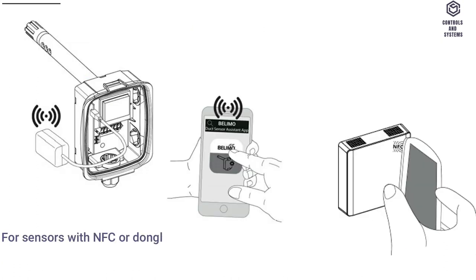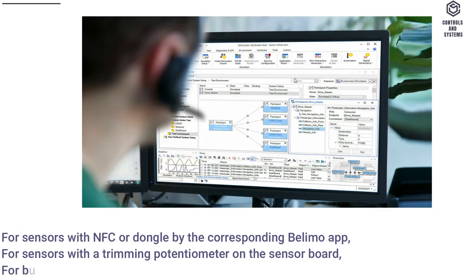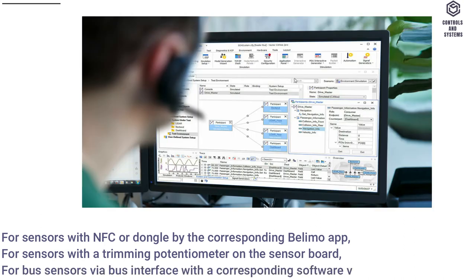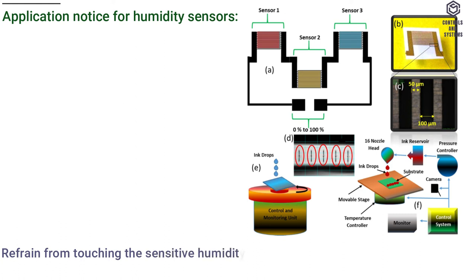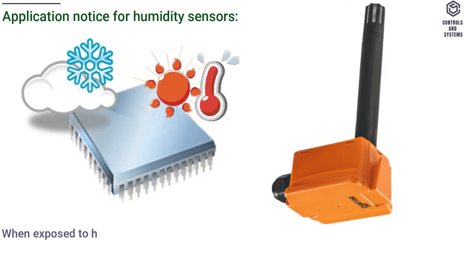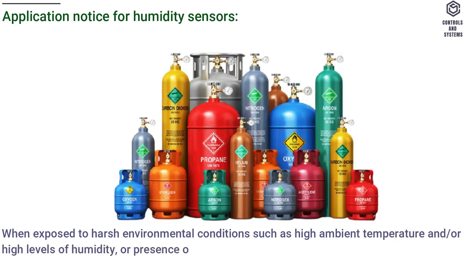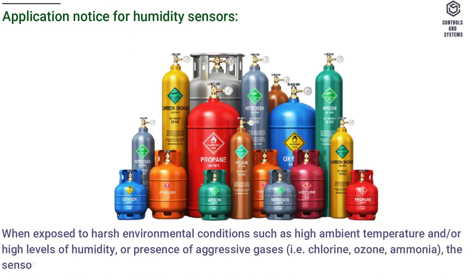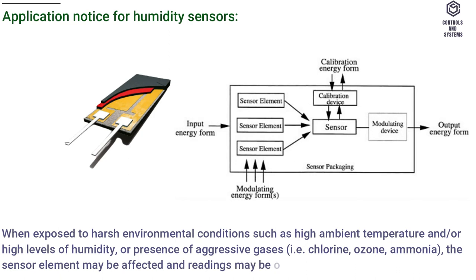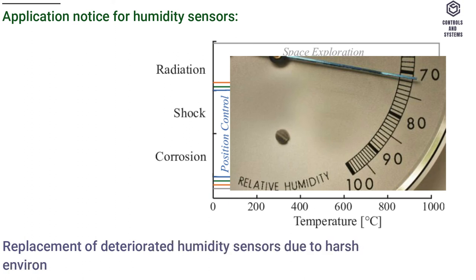Adjustment methods: for sensors with NFC or dongle, by the corresponding Belimo app; for sensors with a trimming potentiometer on the sensor board; for bus sensors via bus interface with a corresponding software variable. Application notice for humidity sensors: refrain from touching the sensitive humidity sensor element — touching the sensitive surface will void warranty. When exposed to harsh environmental conditions such as high ambient temperature and/or high levels of humidity, or presence of aggressive gases (chlorine, ozone, ammonia), the sensor element may be affected and readings may be outside the specified accuracy. Replacement of deteriorated humidity sensors due to harsh environmental conditions is not covered by the general warranty.